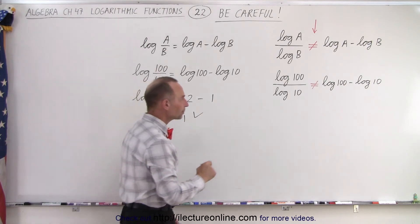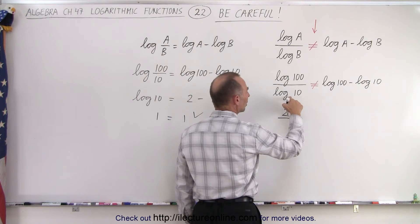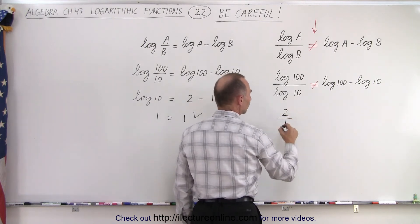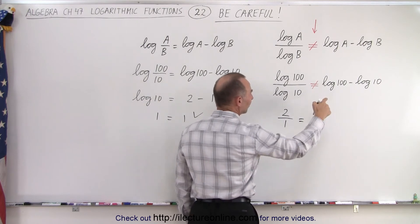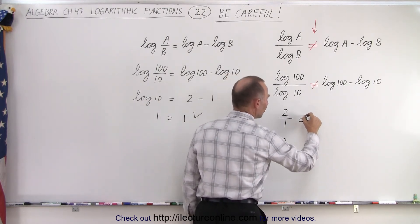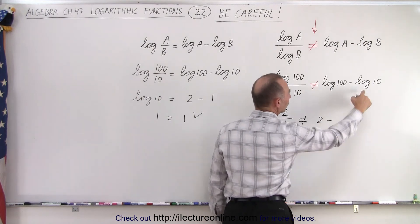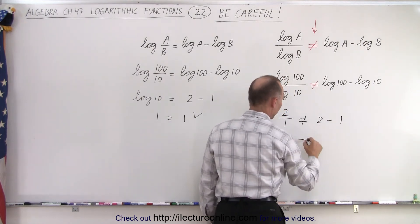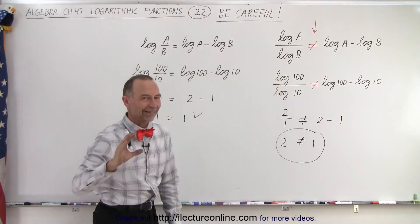But over here we have the log of 100 in the numerator that's equal to 2 divided by the log of 10 in the denominator which is equal to 1, which equals 2. And this is of course not equal. Here we have the log of 100 which is 2 minus the log of 10 which is 1, and you can clearly see that 2 is not equal to 1.